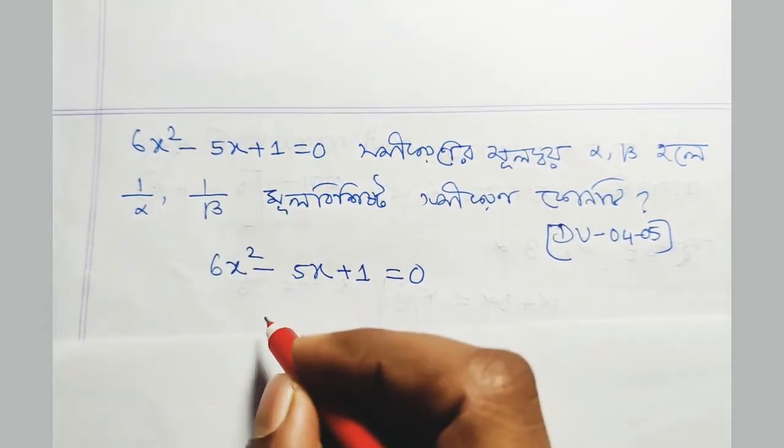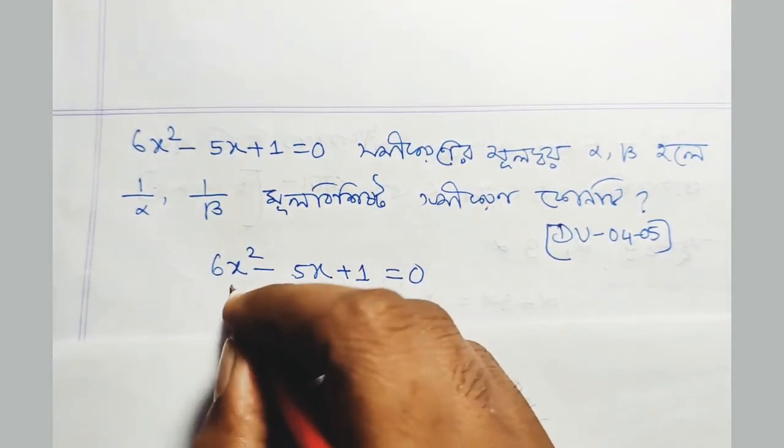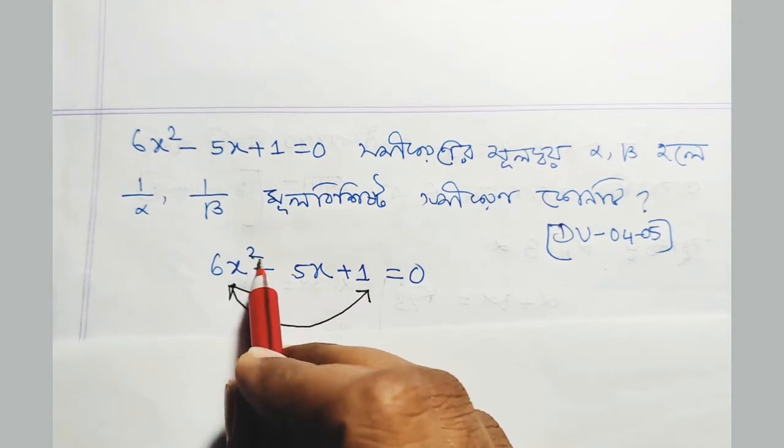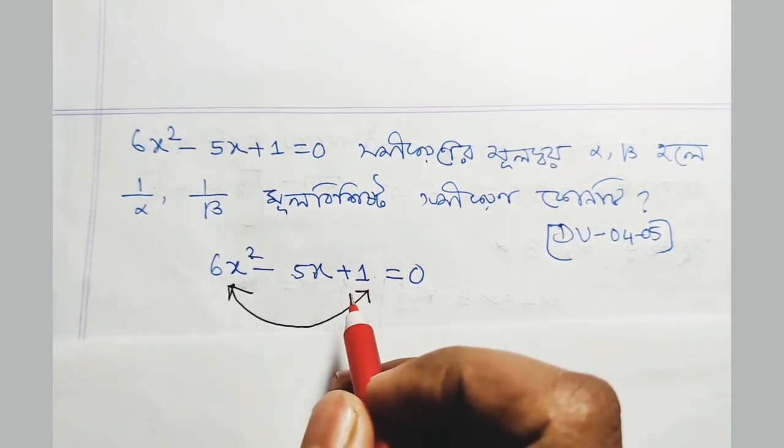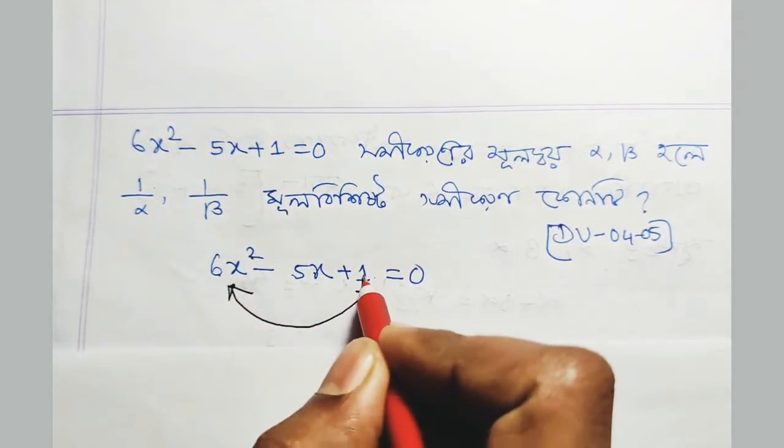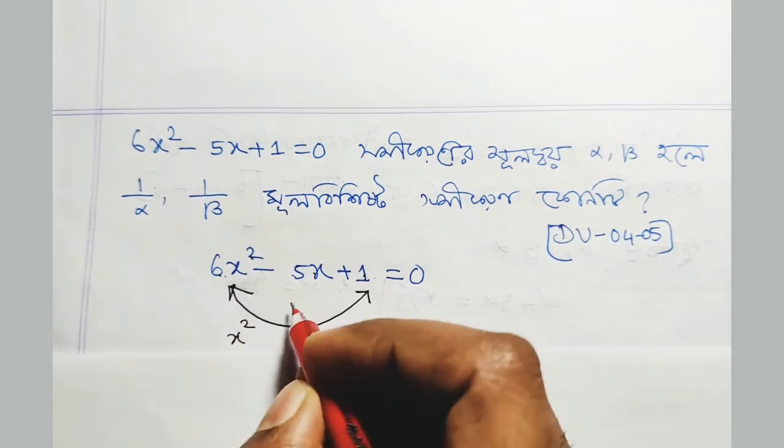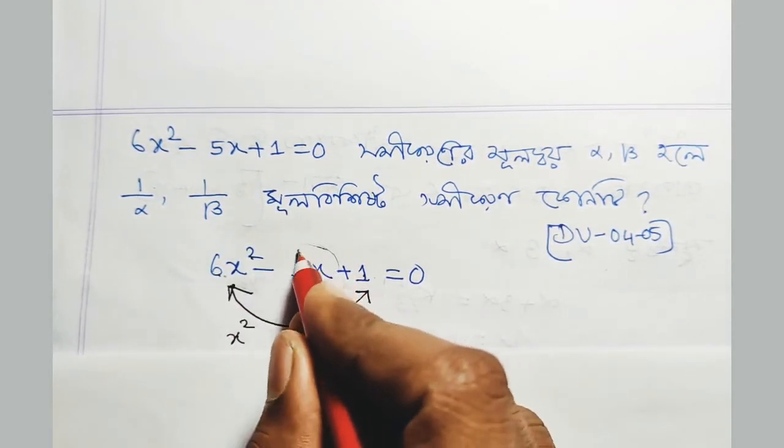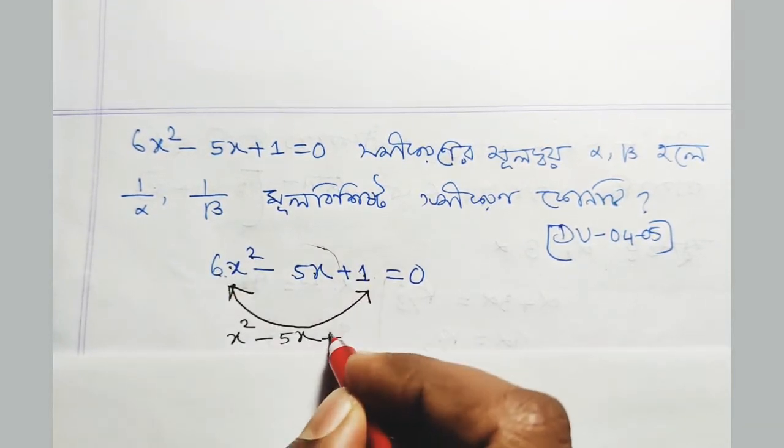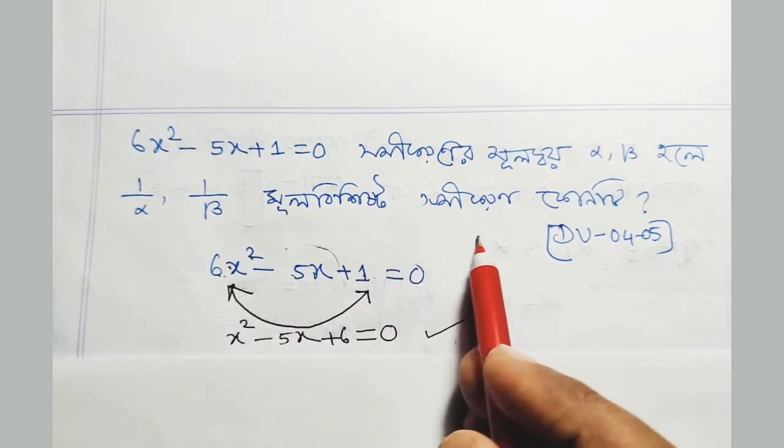So we can continue with this equation. For this, we'll use x² format. We have 5x and minus 6 in the equation. For alpha and beta, we need to find the values systematically.